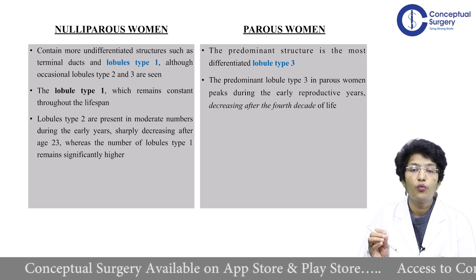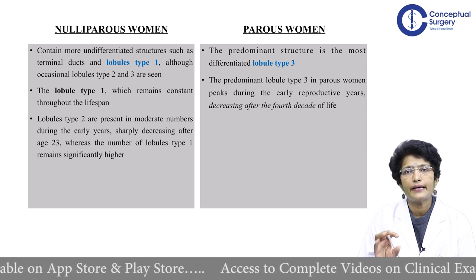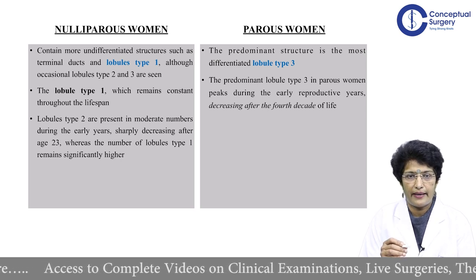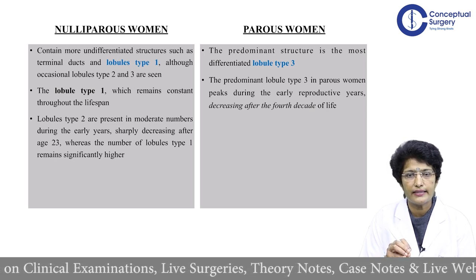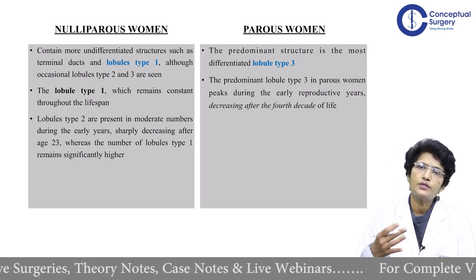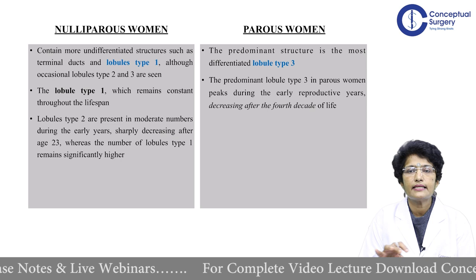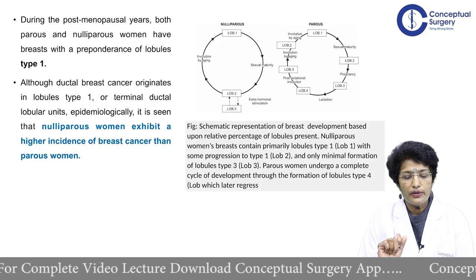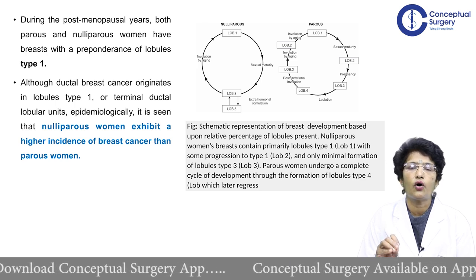In nulliparous women, there are more undifferentiated structures such as terminal ducts and lobule type 1, with occasional type 2 and type 3. Lobule type 1 remains constant throughout their lifespan. Lobule type 2 are present until the early teens and sharply decrease after age 23. Compare this with parous women, where the predominant structure is lobule type 3, which remains active during the reproductive years and starts decreasing after the fourth decade. During post-menopausal years, both parous and nulliparous women predominantly have lobule type 1.